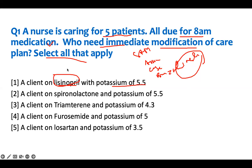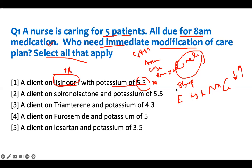Lisinopril is a potassium-sparing medication — it is going to increase your potassium. We don't need to go through the renin-angiotensin system, but they spare your potassium. If they're sparing potassium and the potassium is 5.5, we have to be sharp about it — this is a priority action. Electrolytes to watch are magnesium, potassium, sodium, and calcium. Potassium of 5.5 with lisinopril, which will spare and raise it further, is a problem. We have to see this patient.